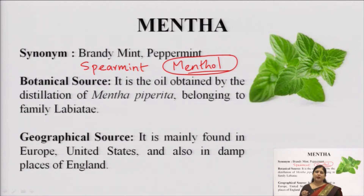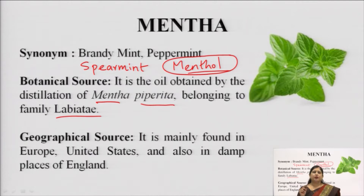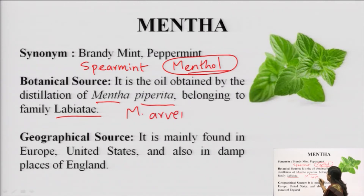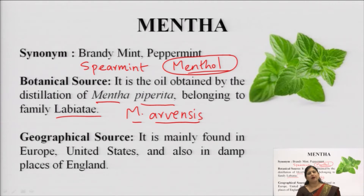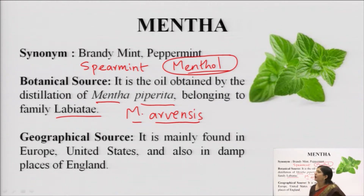Now we move to the biological source of mentha. Mentha is the volatile oil obtained by distillation of Mentha piperita belonging to the family Labiatae. The biological name is Mentha piperita, family Labiatae. There are other varieties also — one is Mentha arvensis which has a similar amount of menthol. However, the official variety — approved by pharmacopoeias — is Mentha piperita.